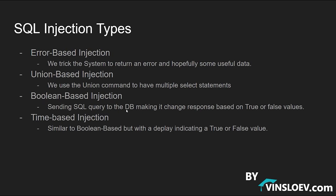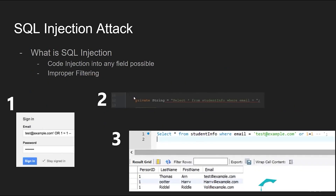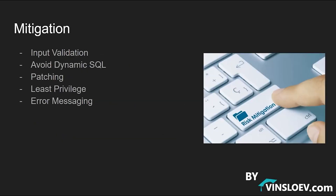Boolean-based injection tricks the database into giving a response based on a boolean value — if true it acts one way, if false it acts another, allowing the attacker to infer information about the backend and database structure. Time-based injection is similar to boolean, except instead of relying on an instant true/false value, it uses a time delay to indicate whether the statement was true or false. These four are the most common SQL injection attacks. In the next lecture we'll look at tools for automating these attacks to test your own web application for weaknesses.